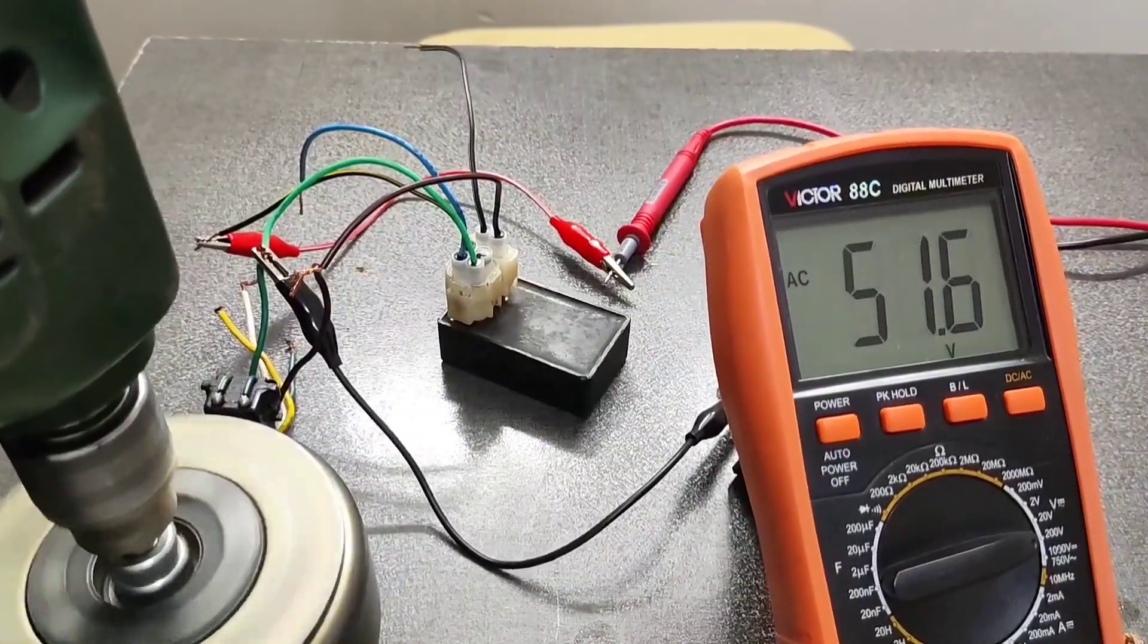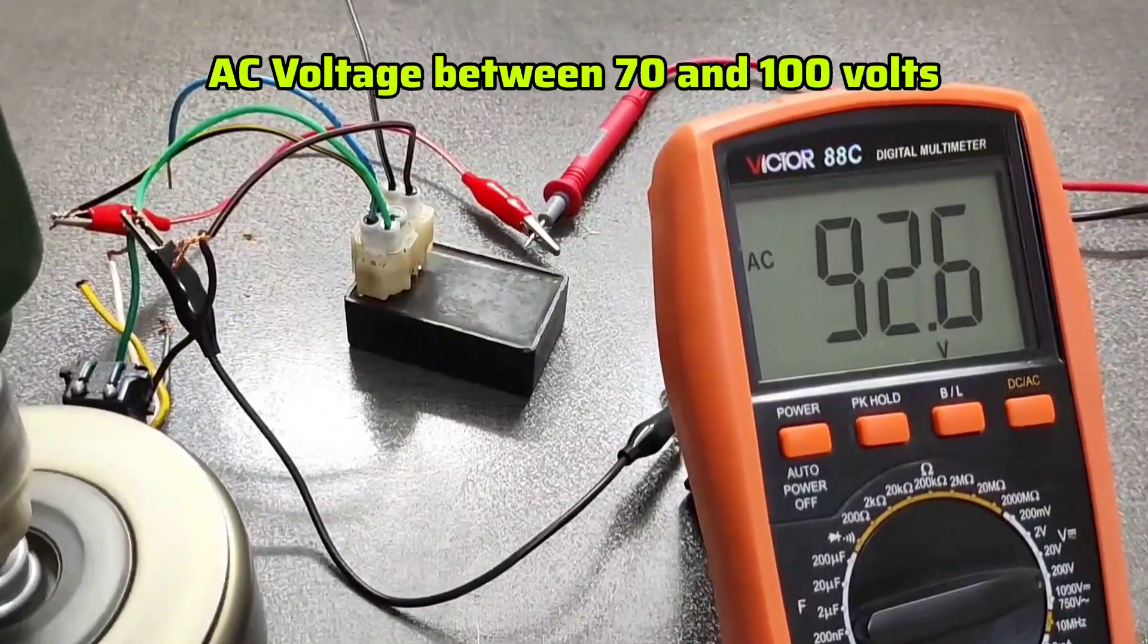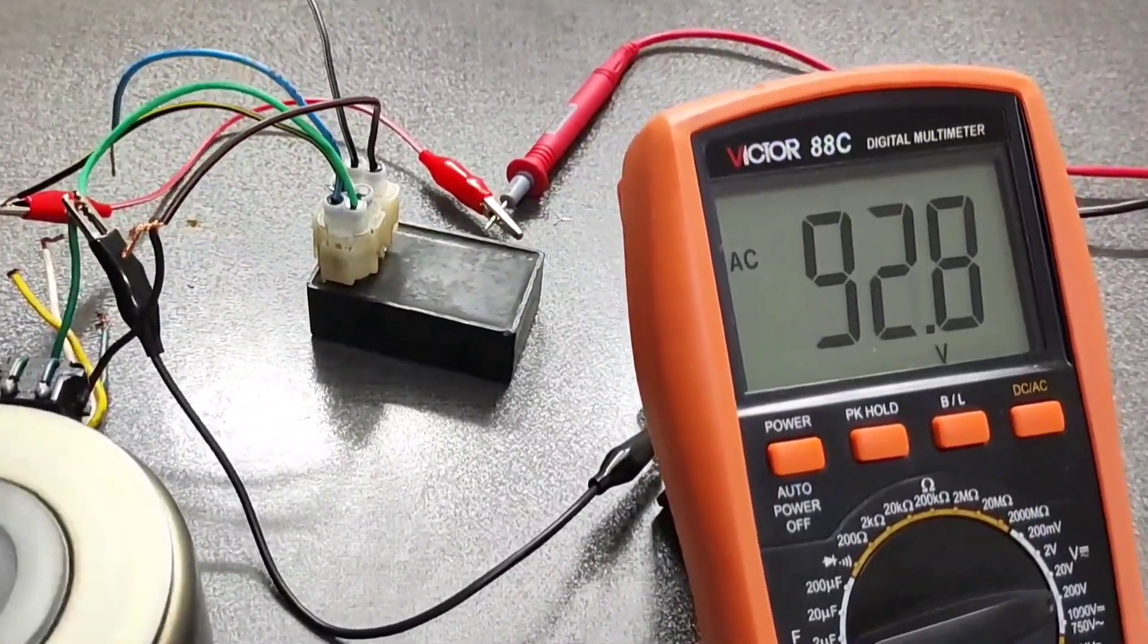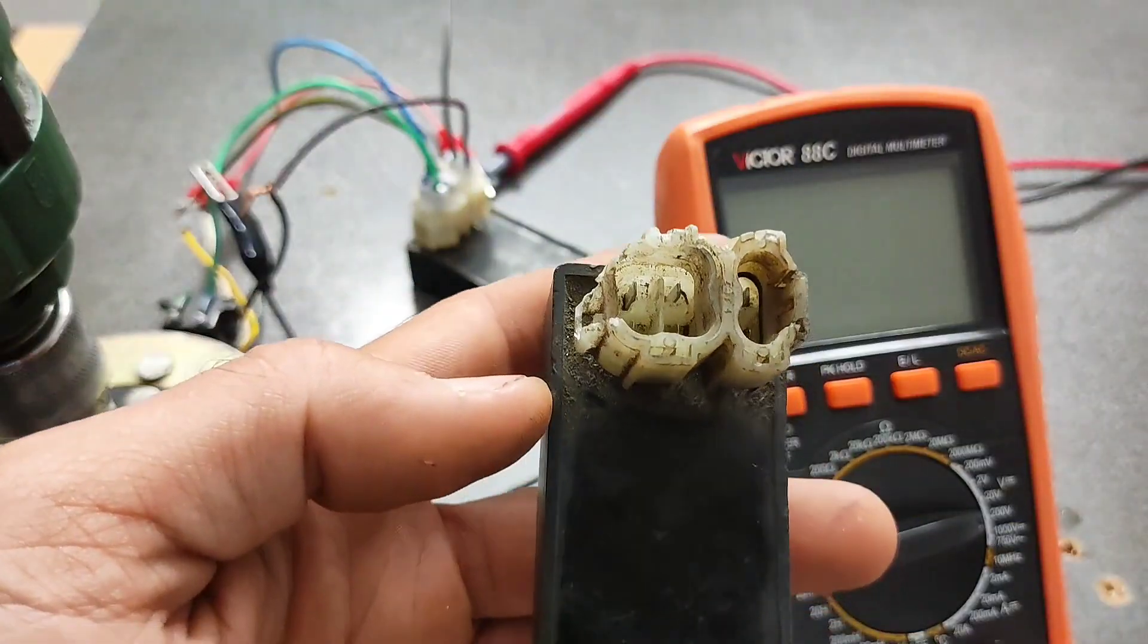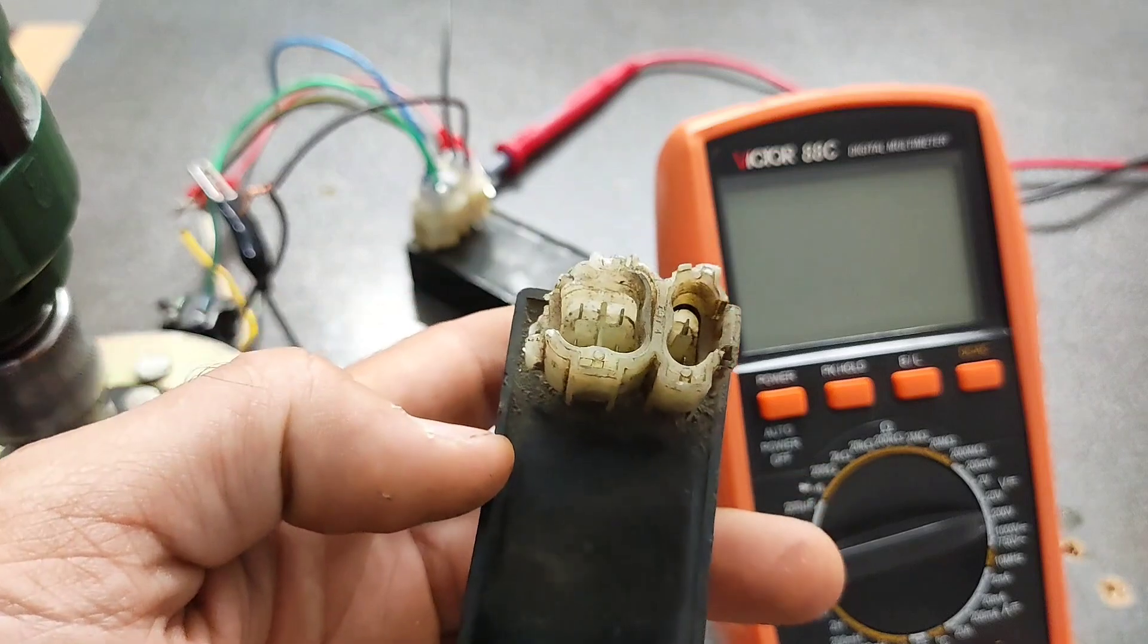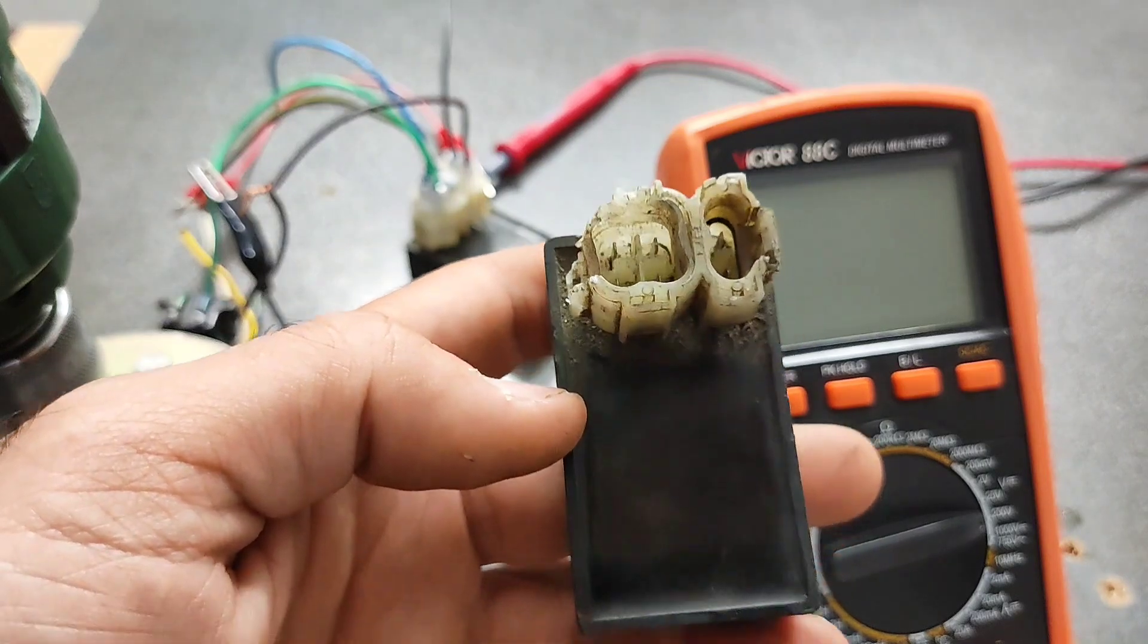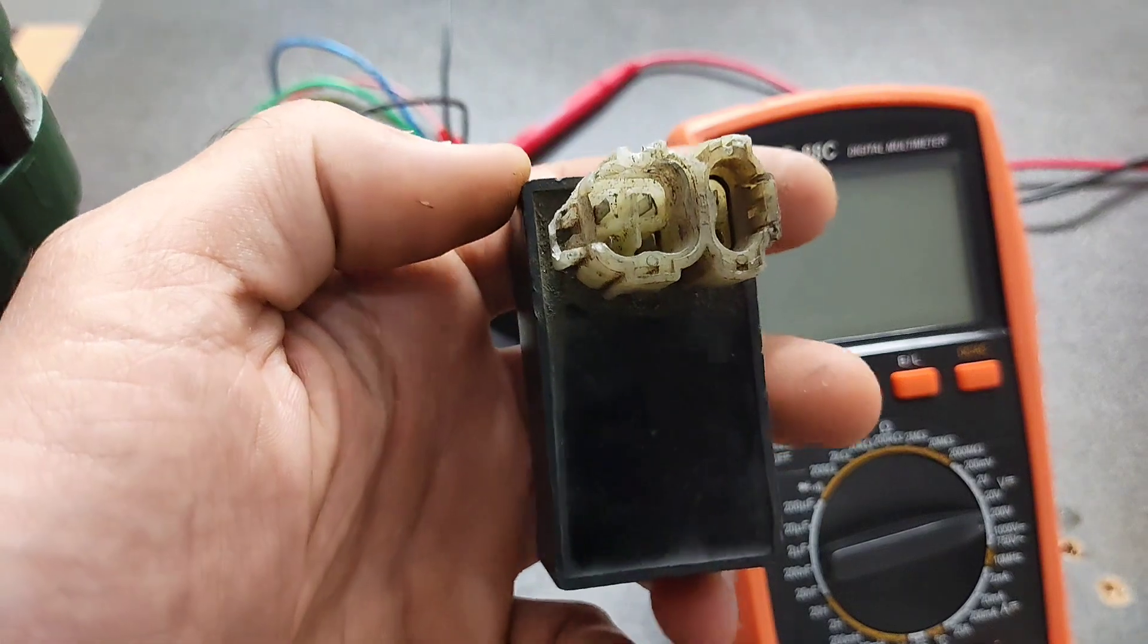As you saw, this CDI gave an output voltage of 80 volts at around 3000 RPM, so it's completely fine. I'm going to test this faulty CDI. If output voltage is zero or very low, you must replace the CDI.